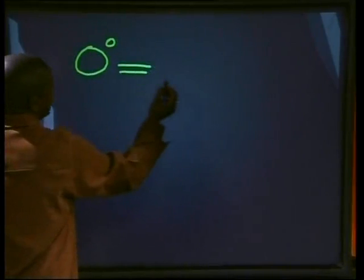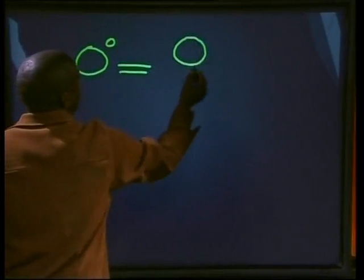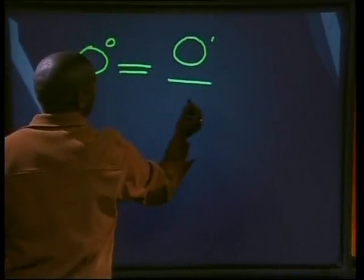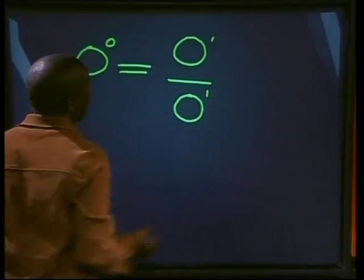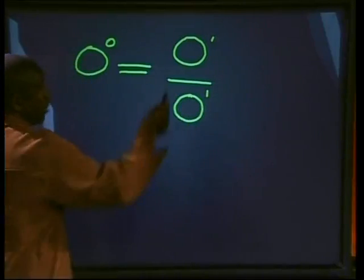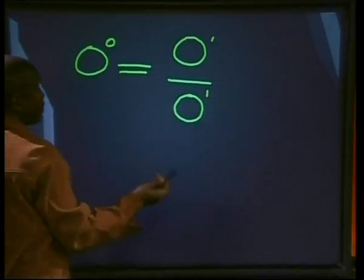What about zero to the power of zero? Well, zero to the power of zero would be the same as zero to the power one divided by zero to the power one. But zero divided by zero is meaningless, therefore we can say that zero to the power of zero is meaningless. So any non-zero number to the power of zero is one.